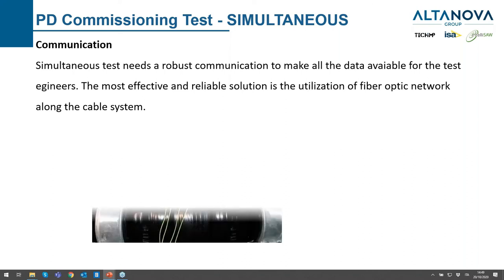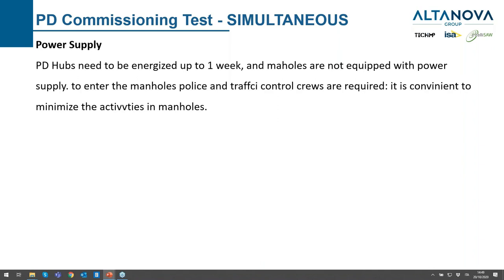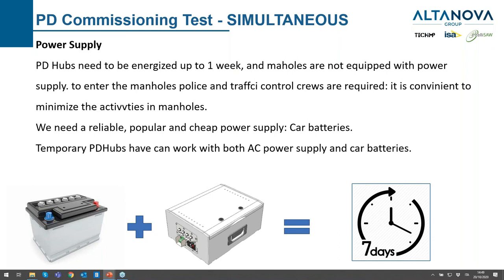Another requirement on site is the power supply, since we need to energize the PD acquisition units for many days to complete the job, or longer if problems occur. We need a reliable, easy-to-find, and cheap power supply. The solution found was car batteries — the temporary PD acquisition units have been developed to be energized with car batteries. With this configuration, we install everything, connect the acquisition box to the car batteries, close the pit and the joint bay, and we will have communication with the acquisition units for seven days.